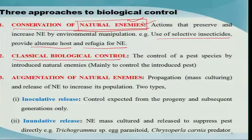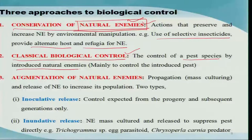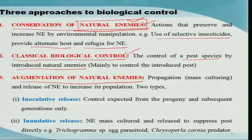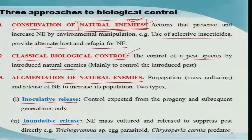The second approach is classical biological control - one example has already been explained - and this type of control mainly holds good when there is an introduced or exotic pest. This is normally done by introducing natural enemies from the place where the pest originated. The third approach is the augmentation of natural enemies. Based on how quickly we need to control the pest, we go for two types: one is an inoculative release and the second is an inundative release. In inoculative release, we release only a few individuals or smaller colonies of natural enemies so that they sustain and in subsequent generations actually control the pest.